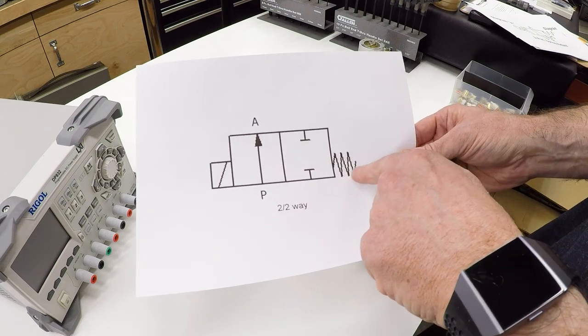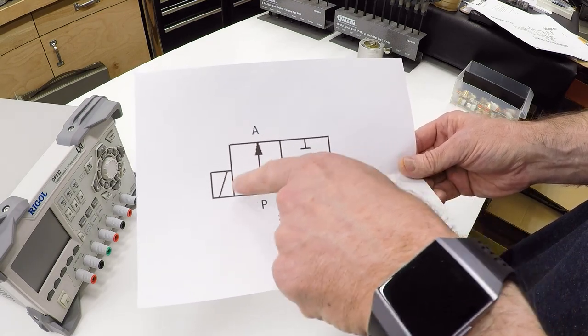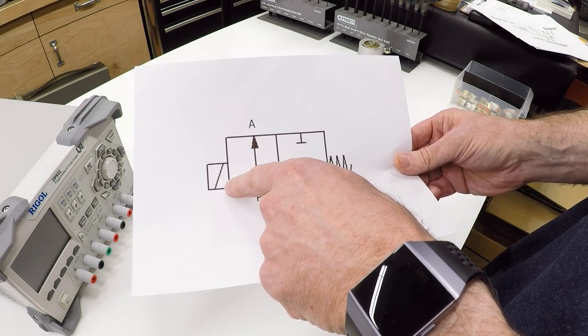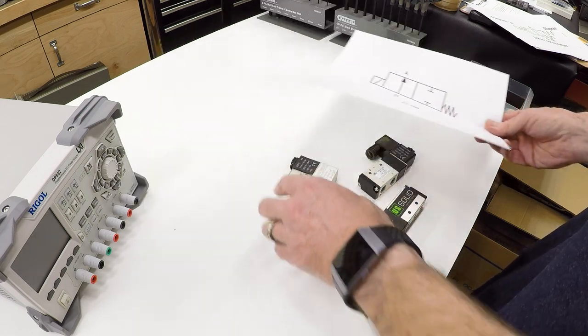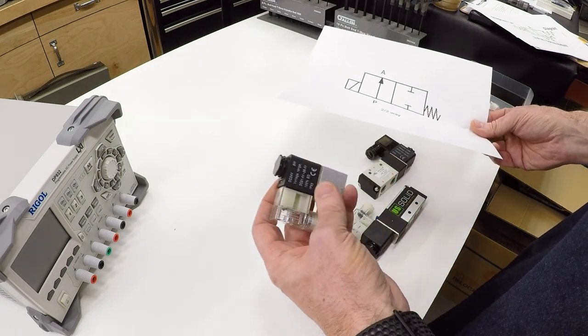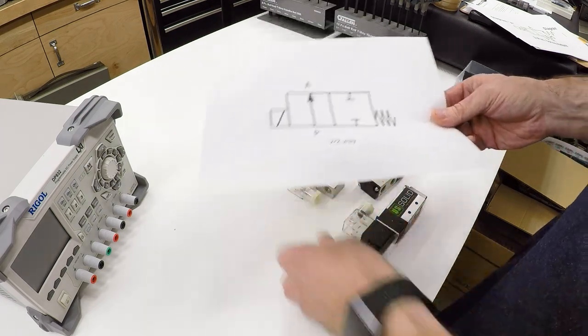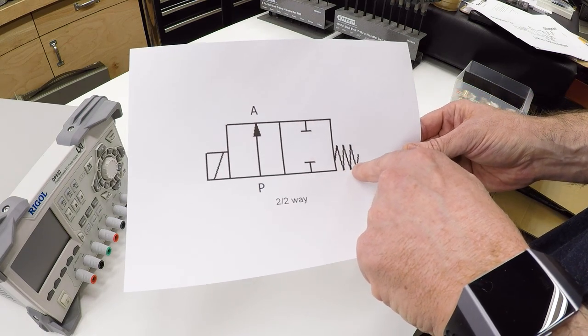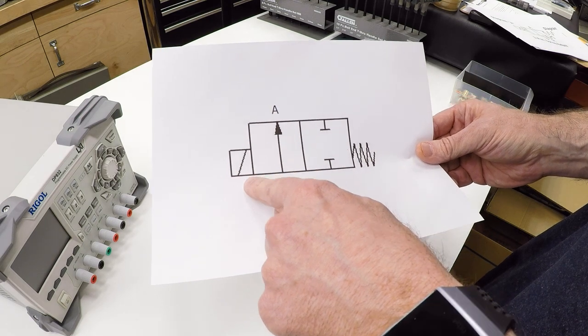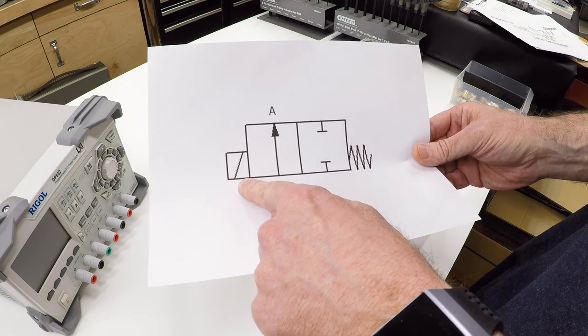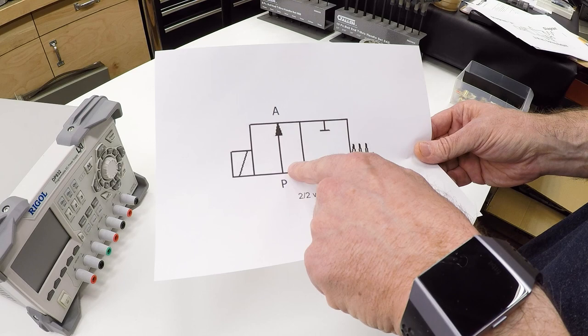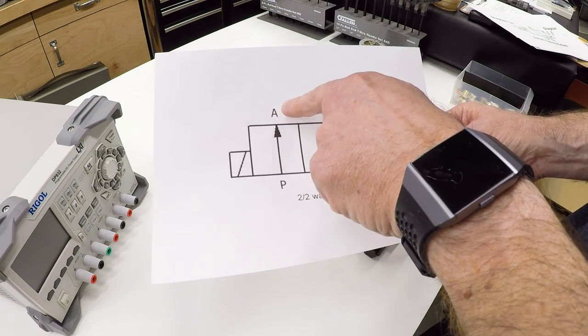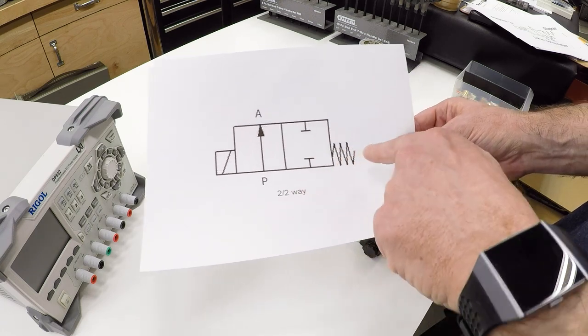The symbols on the side tell you how these different states are activated. This rectangle with a slash through it is an electric solenoid, and that's the electromagnet that is mounted here on the top of the valve. This symbol on the other side is a spring that's inside the valve. When this solenoid is active, when there's current flowing through the electromagnet, this state of the valve will be selected so that air can move from the P port to the A port.